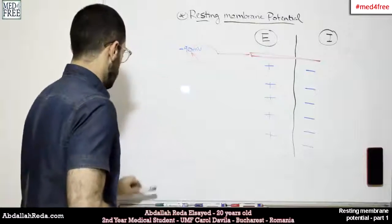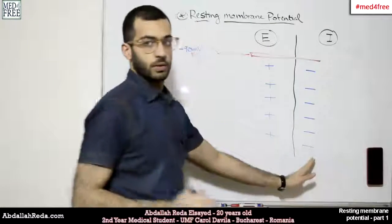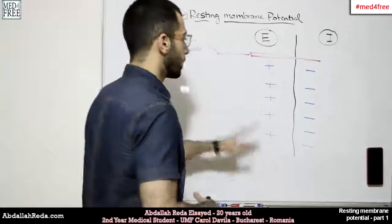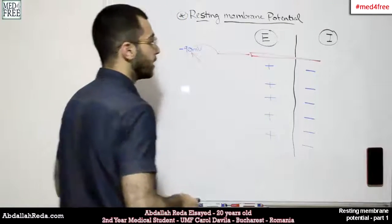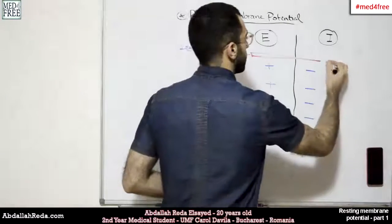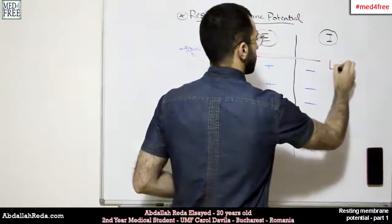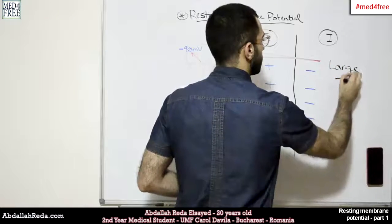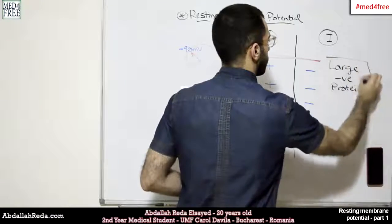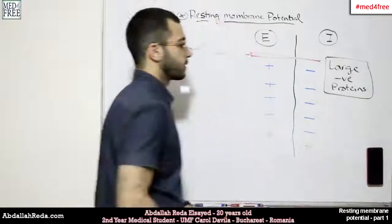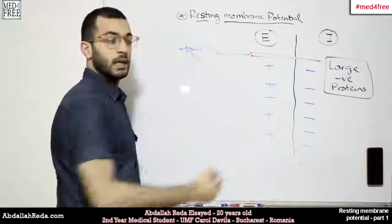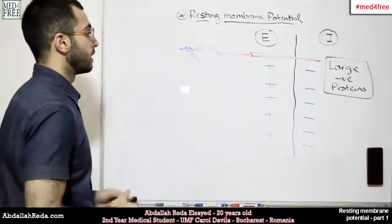The main reason that we have negative charges on the inside is not because of the ions. We're going to talk about the ions, but the main reason that we have negative charges on the inside is that we have large negatively charged proteins. These large negatively charged proteins are the reason why there are negative charges on the inside of the cell.